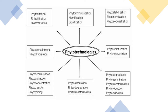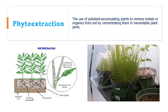The first technology is phytoextraction — the use of pollutant-accumulating plants to remove metals or organics from soil by concentrating them in harvestable plant parts. Plants absorb metals or organic compounds into their leaves, shoots, or roots, which can then be harvested and safely disposed. Contaminants are absorbed from the roots upward into the plant.